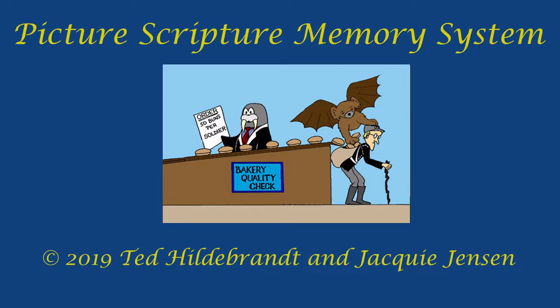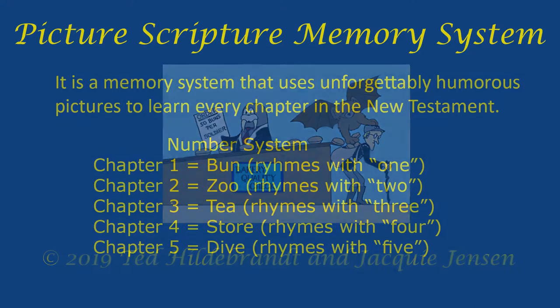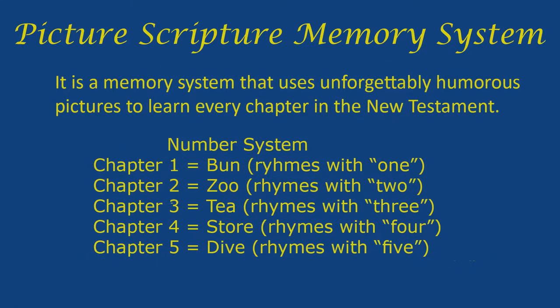Let's first look at the number system for the epistles. Number one is bun — there'll be a hamburger or hot dog bun in the picture. Number two is zoo — there'll be animals in a zoo-kind-of picture for chapter two. Two rhymes with zoo.